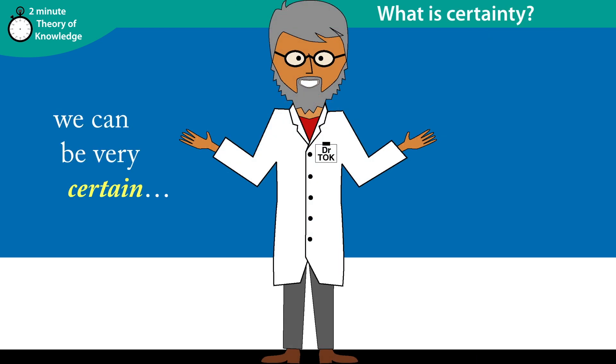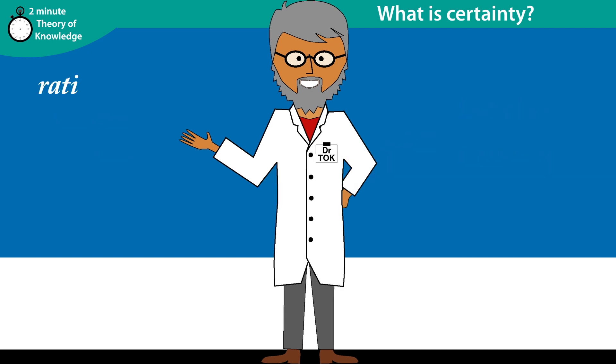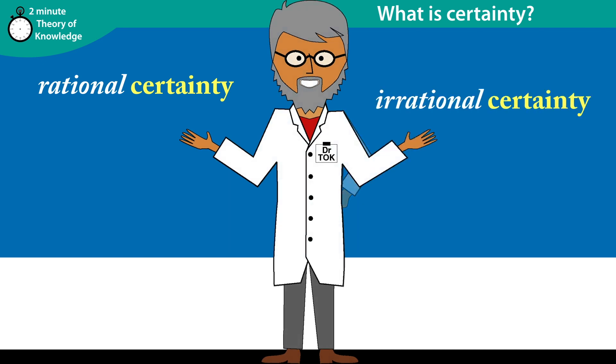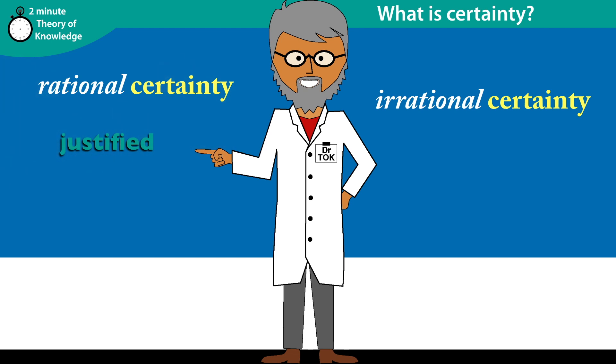The problem is that we can be very certain, but also wrong at the same time. In TOK we can usefully distinguish between rational and irrational certainty. Rational certainty is when our confidence is justified, relying on reasoning, based on evidence.